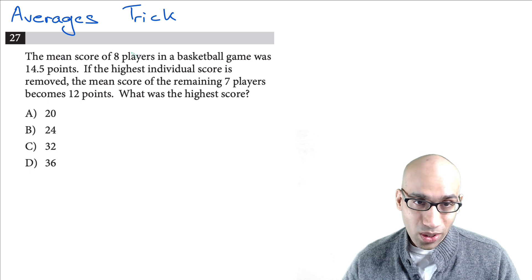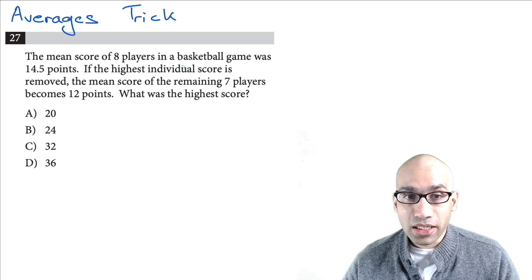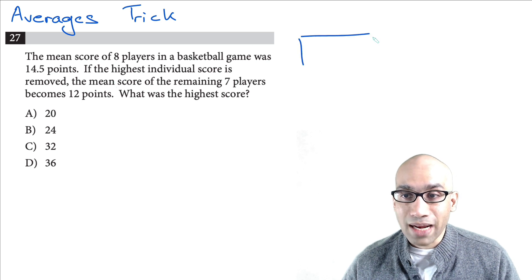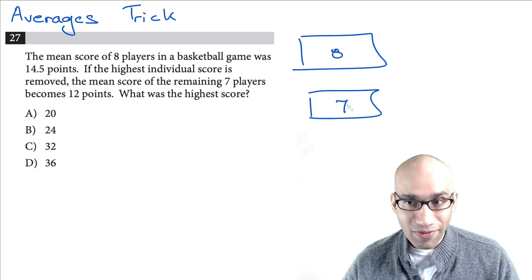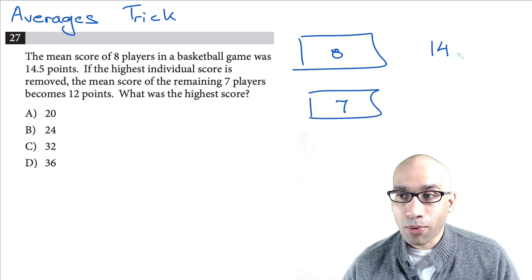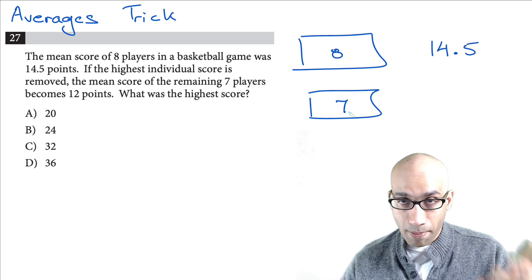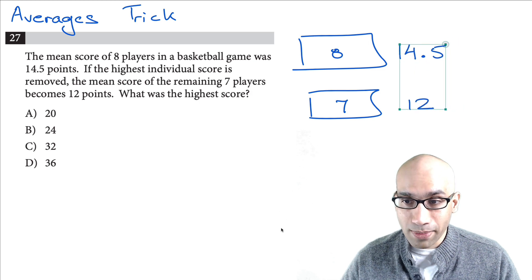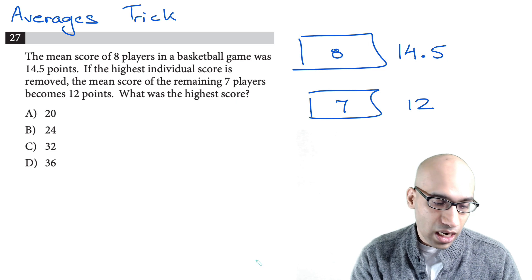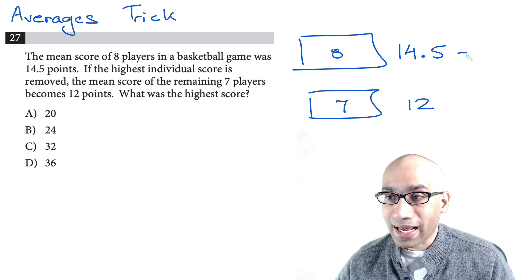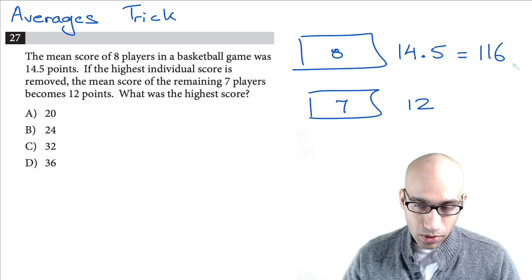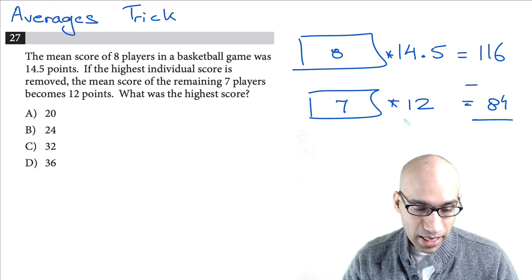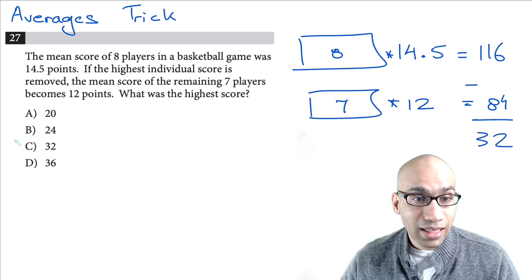Moving on: you're given that the mean score of 8 players is 14.5. Remember, mean equals sum divided by total. One player is removed, leaving 7 players with an average of 12. Multiply 8 times 14.5 to get 116, then multiply 7 times 12 to get 84. Take the difference: 116 minus 84 equals 32 — that's your answer.